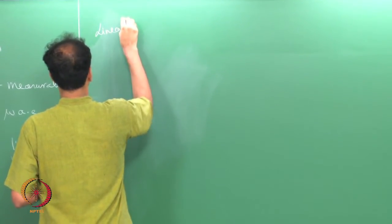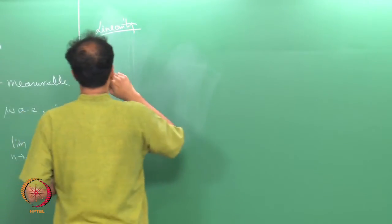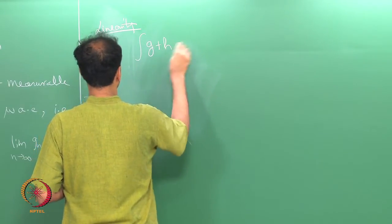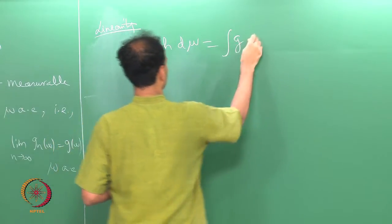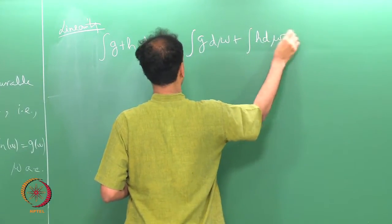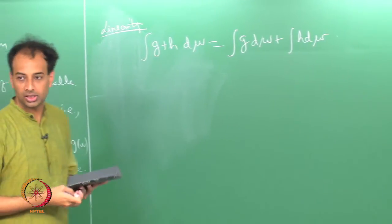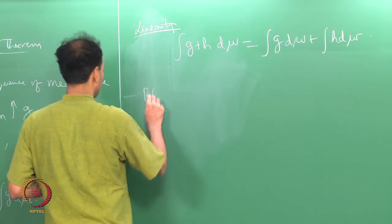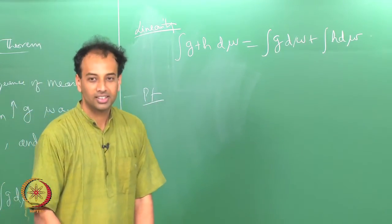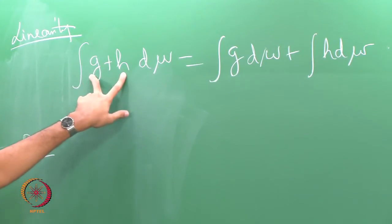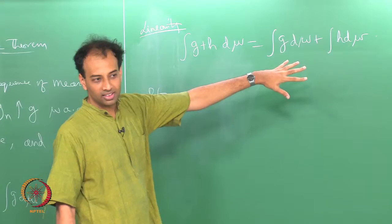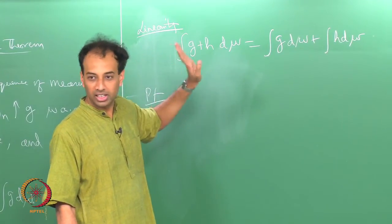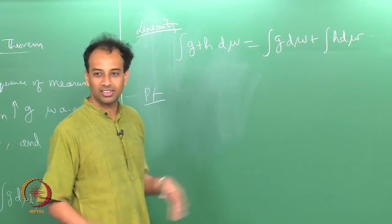So let us get back to linearity. This says that the integral of g plus h d_mu is equal to the integral of g d_mu plus the integral of h d_mu. This is a property we never proved. As you might expect, the proof goes in the usual sequence: you prove it for simple functions, then generalize to arbitrary non-negative functions, and then go to g-plus and g-minus — that is standard.